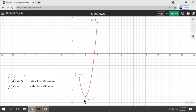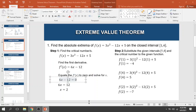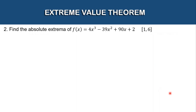Now let's have example number 2. Find the absolute extrema of the function f(x) = 4x³ − 39x² + 90x + 2 on the closed interval 1 to 6.